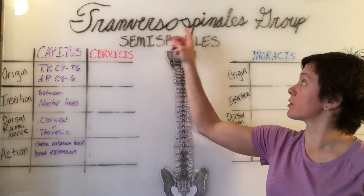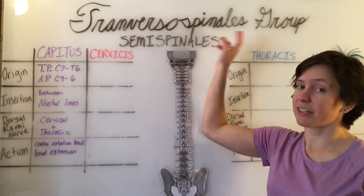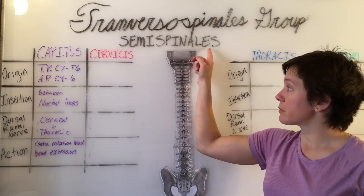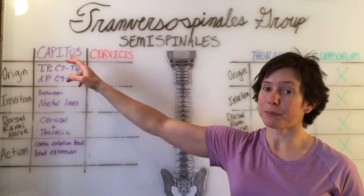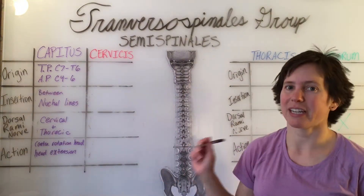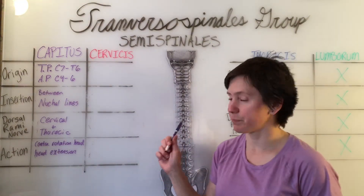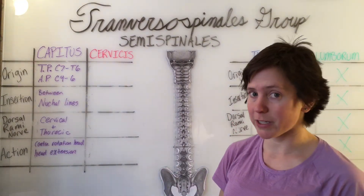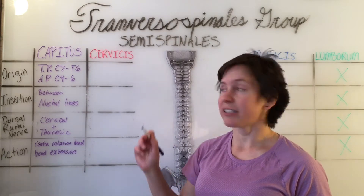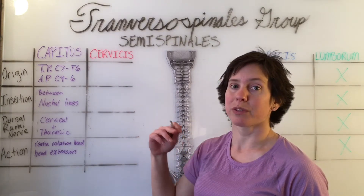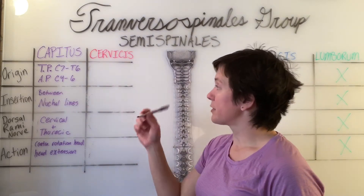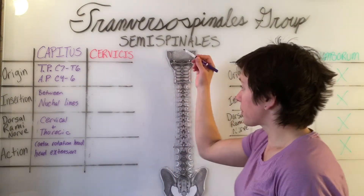This is the transversospinales group and the first muscle in this group is the semispinalis capitis, cervicis, and thoracis. We're going to start with semispinalis capitis. We learned from the last video that the spinalis capitis blends with the semispinalis capitis, and now we will see that in person.